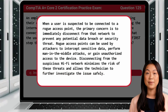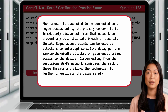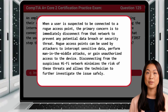When a user is suspected to be connected to a rogue access point, the primary concern is to immediately disconnect from that network to prevent any potential data breach or security threat. Rogue access points can be used by attackers to intercept sensitive data, perform man-in-the-middle attacks, or gain unauthorized access to the device. Disconnecting from the suspicious Wi-Fi network minimizes the risk of these threats and allows the technician to further investigate the issue safely.